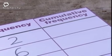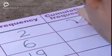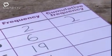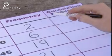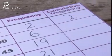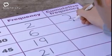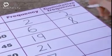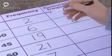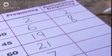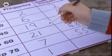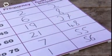The cumulative frequency starts at 2. Next, it's 2 plus 6, which is 8. Next, it's 2 plus 6 plus 19, which is 27. Then 48, 55, and 56.